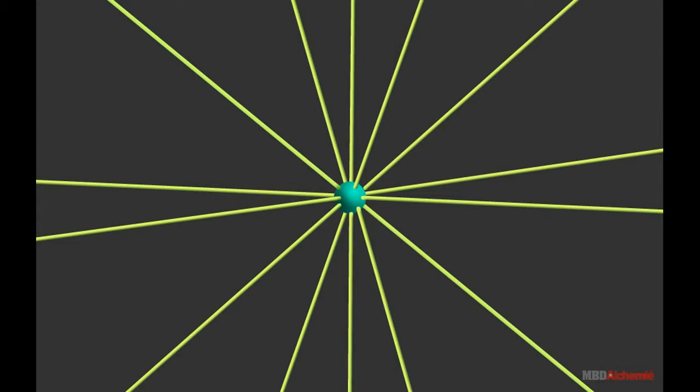In the given video, a stationary electric charge and the electric field lines produced by it are shown. A stationary electric charge does not produce electromagnetic waves.